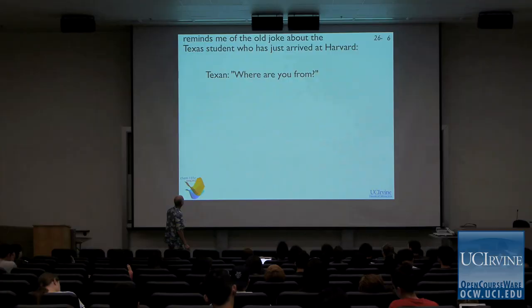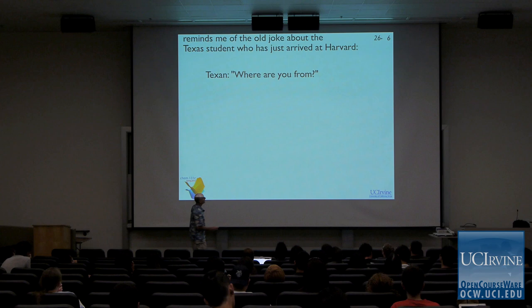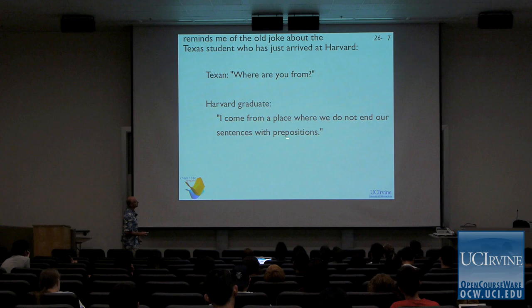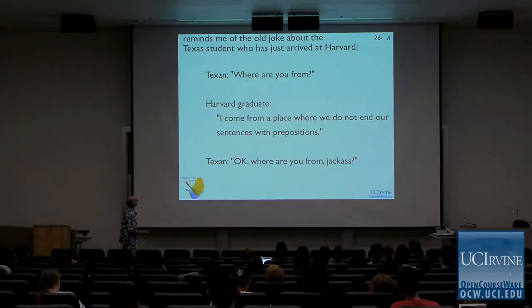It reminds me — this statement is grammatically incorrect, it's a dangling preposition. The Texas student goes to Harvard and asks a Harvard student, 'Where are you from?' The Harvard graduate says, 'I come from a place where we do not end our sentences with prepositions.' So the Texan says, 'Okay, where are you from?' Other words are sometimes substituted.